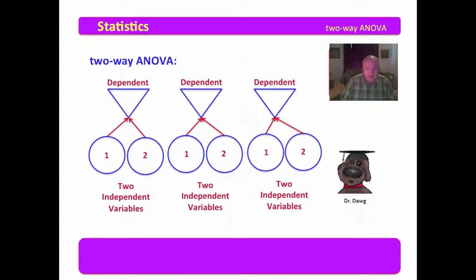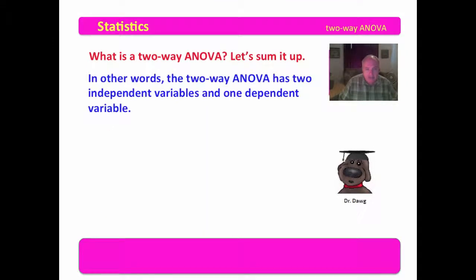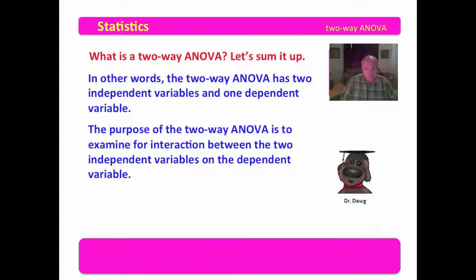You're looking at the independent variables and their interaction on the dependent variable — how do they interact, and how do they interact on the dependent variable? That's what you're doing in a two-way ANOVA. The independent variables are categorical; the dependent variable is continuous. The purpose of the two-way ANOVA is to examine for interaction between the two independent variables on the dependent variable.